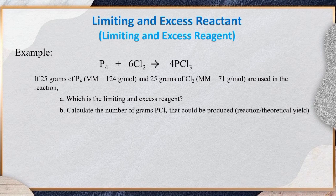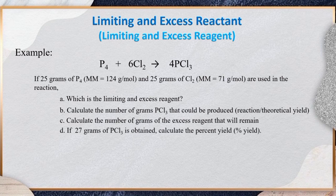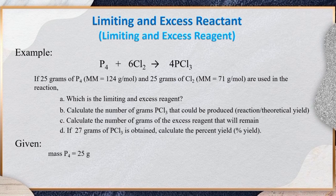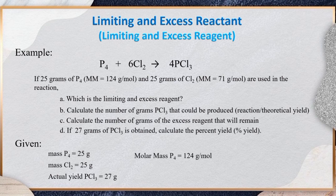Calculate the number of grams of PCl₃ that could be produced. Calculate the number of grams of the excess reagent that will remain. And for letter D, if 27 g of PCl₃ is obtained, calculate the percent yield. Let us identify first the given quantities: mass of P₄ = 25 g, mass of Cl₂ = 25 g, actual yield of PCl₃ = 27 g, molar mass of P₄ = 124 g/mol, and molar mass of Cl₂ = 71 g/mol.